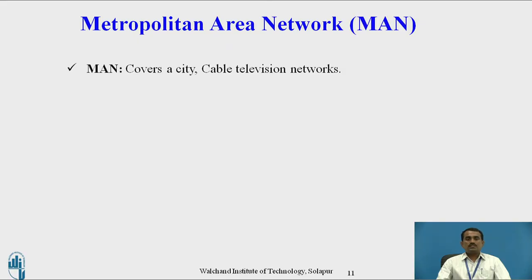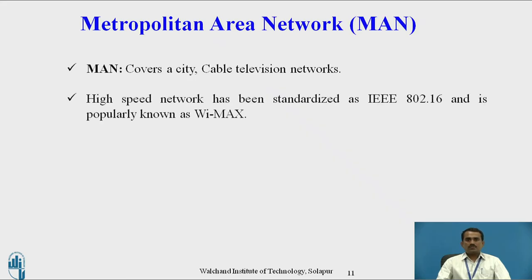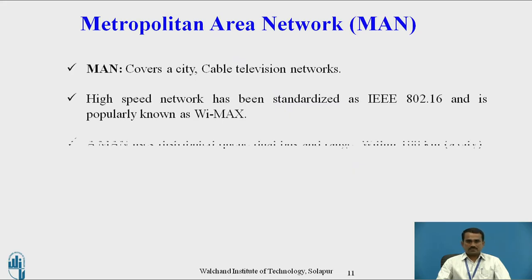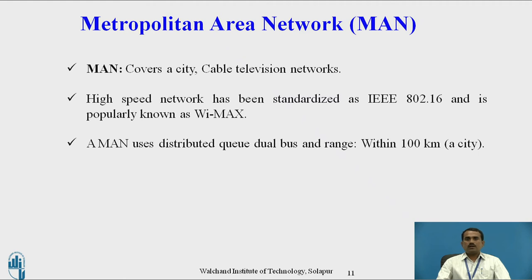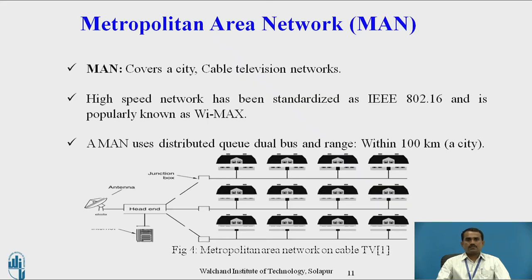Metropolitan Area Network. This covers a city. For example, if a user wants to distribute a television network, they can use the concept of MAN — a cable television network. High-speed networks have been standardized as IEEE 802.16, popularly known as WiMAX. A MAN uses a distributed Q2L bus and has a range within 100 km within a city.